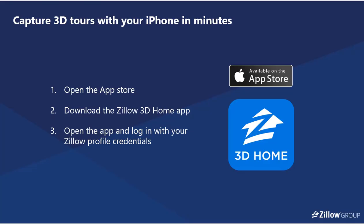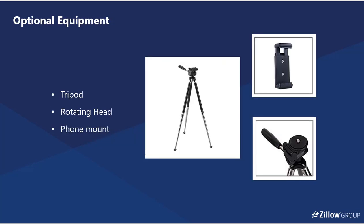Capturing your tour — first, what you'll need to do is go to the App Store and download the 3D Home app. You'll also need to log in with your Zillow profile credentials if you're an agent or photographer so that we can identify you. There is optional equipment you can use, including a tripod, rotating head, and phone mount. This enables a smoother panorama and automates the process, but these are options.